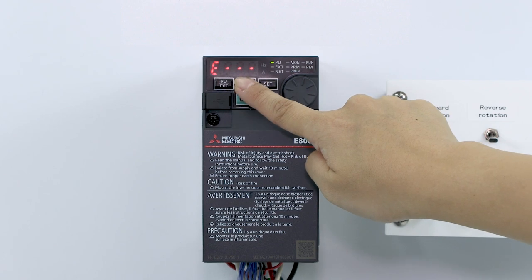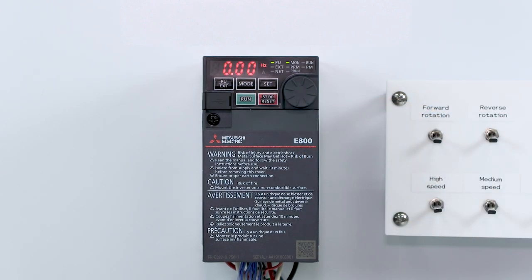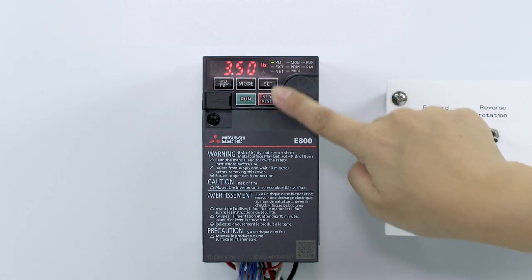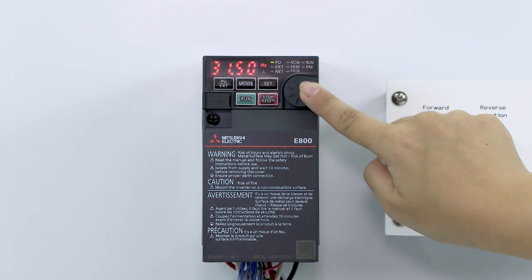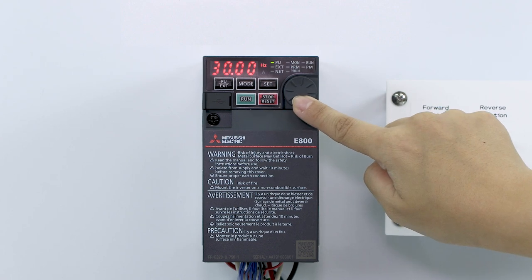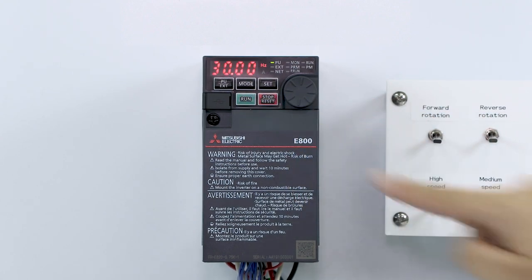Next, set the frequency to 30 Hz. Turn the dial until it displays 30 Hz. The display will flash for about 5 seconds. Press the SET key while the display is flashing.